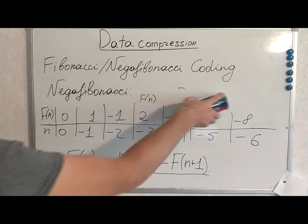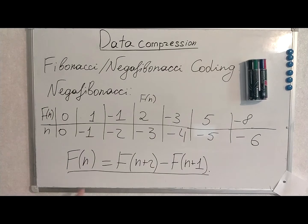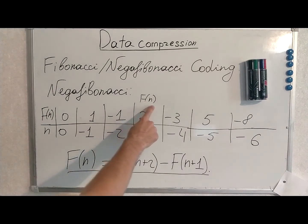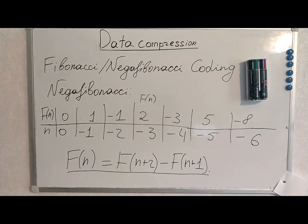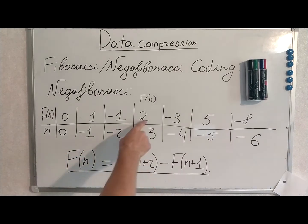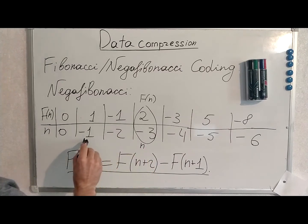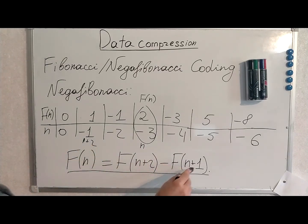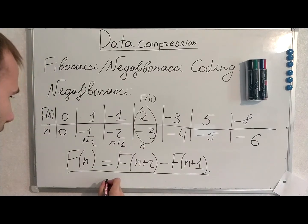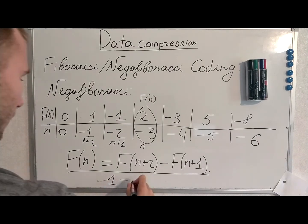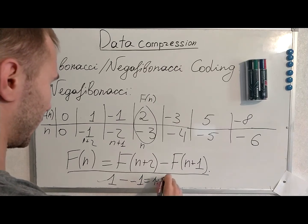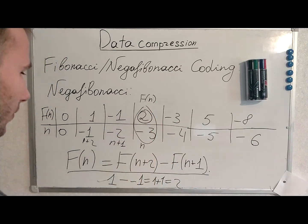Let's work through an example. We have an arbitrarily chosen number, F(N). We have negative numbers here, so N+2 will be -1 because that is where we currently are. This is our N. So N+2 is -1 and N+1 is also -1. Thus we produce 1 minus (-1), which equals 1 plus 1, equals 2. So we have 2 here. You can try it yourself.